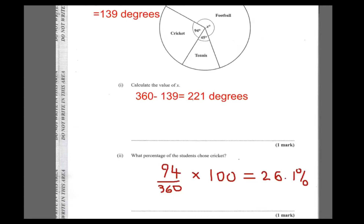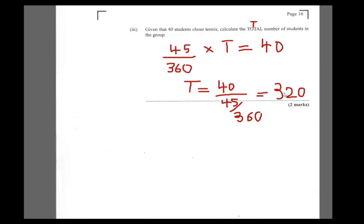And 26.1% of them chose cricket. So checking it out: 0.261 times 320 means 83 students chose cricket, 40 chose tennis, and a whole 197 chose football. All of 197 chose football — that's the result.